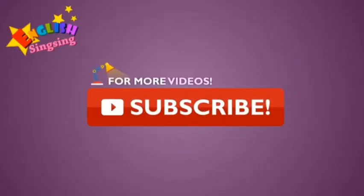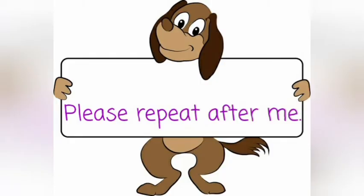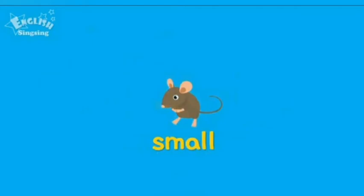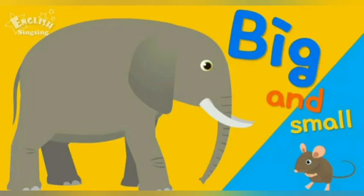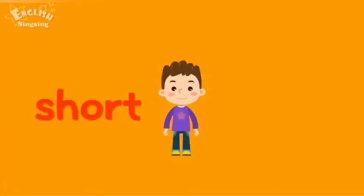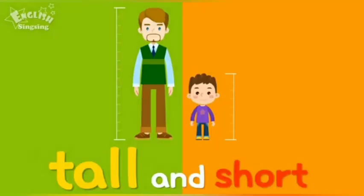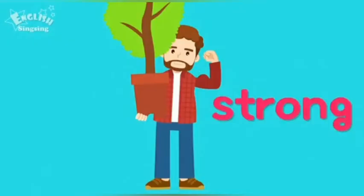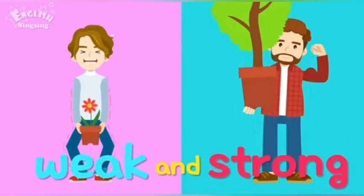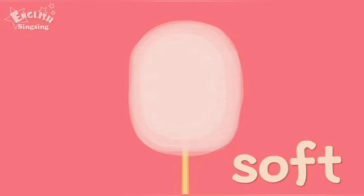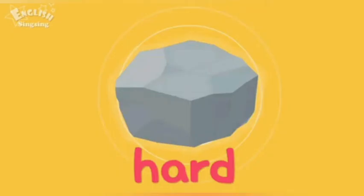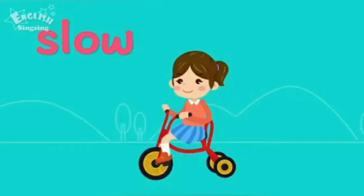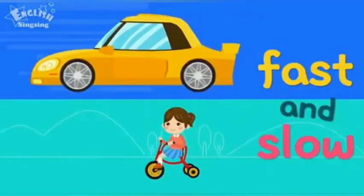Okay everybody, please repeat after me. Big elephant, small mouse, big and small. Short boy, tall man, tall and short. Weak man, strong man, weak and strong. Soft cotton candy, hard rock, soft and hard. Fast car, slow bicycle, fast and slow.